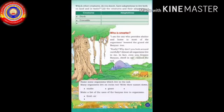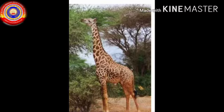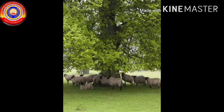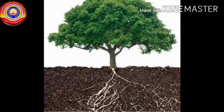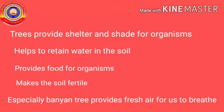Does the banyan tree only provide shelter? No — all trees provide shelter and shade for organisms. Can you see the other uses of trees? Yes, very good. Trees provide food for organisms, trees provide shelter for organisms, and trees help to retain water in the soil.